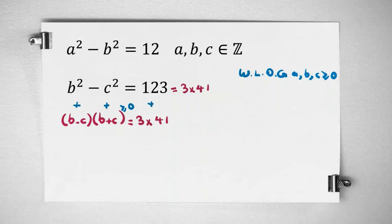So b minus c is also positive. And because c is at least 0, b plus c is greater than or equal to b minus c. So if we write the cases: 1, 123 and 3, 41. We have only these two cases.